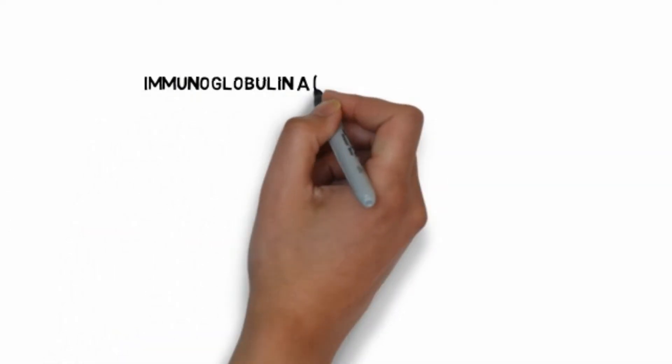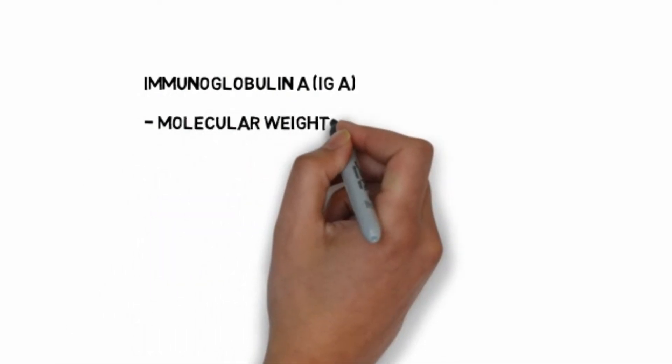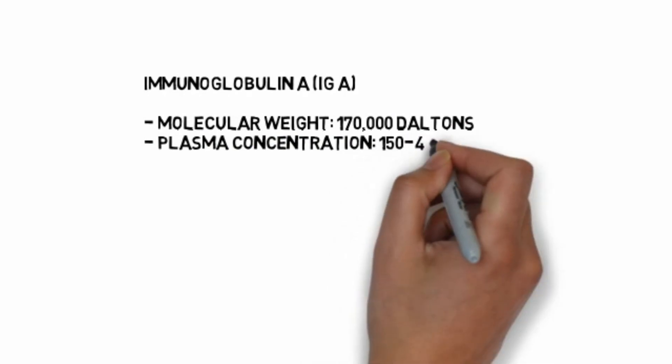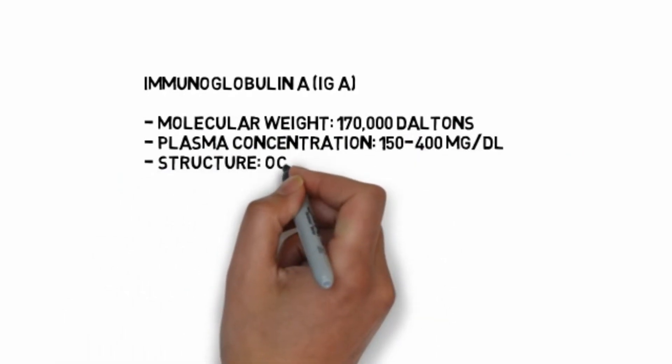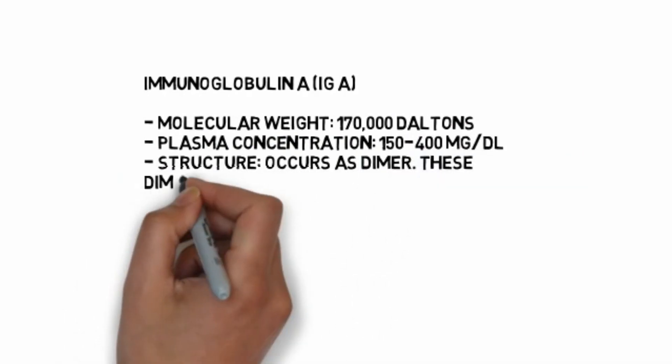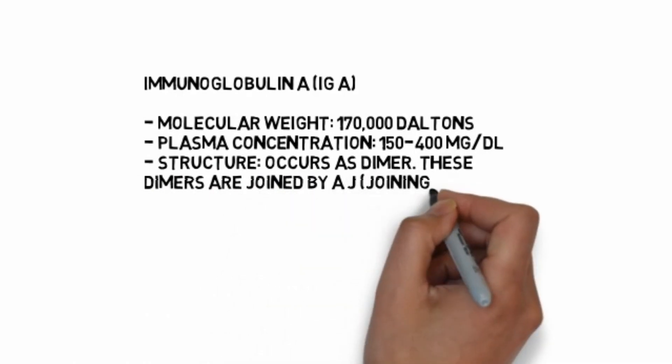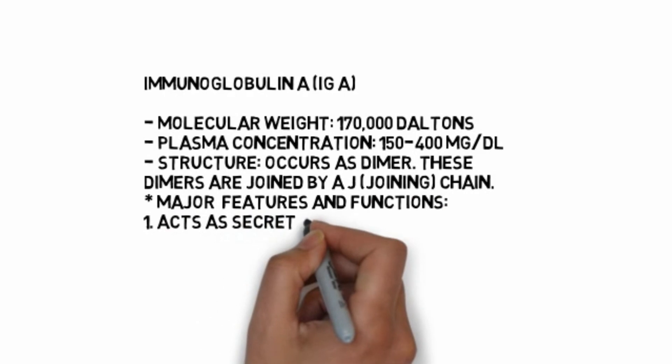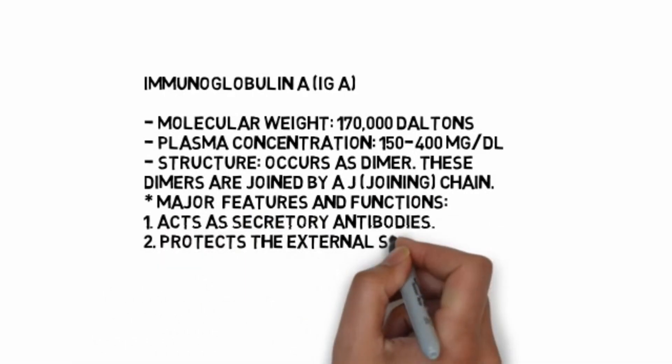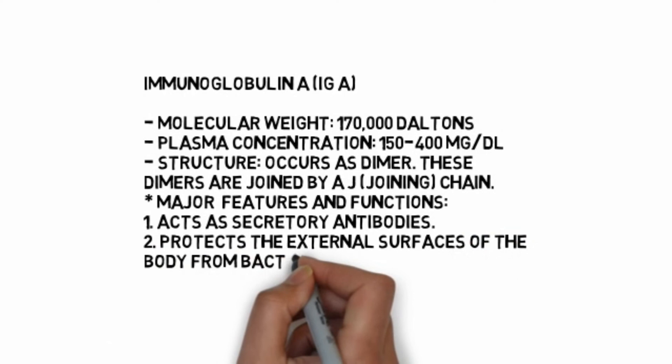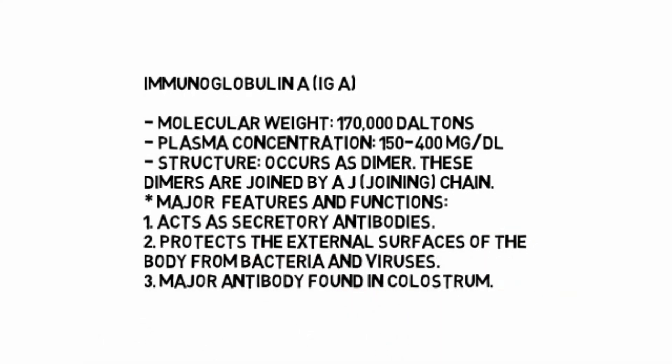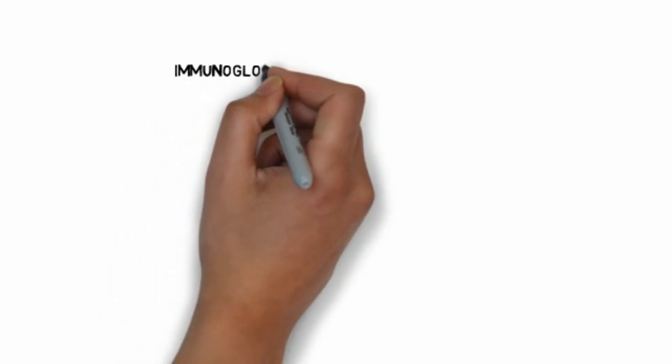Immunoglobulin IgA: molecular weight 170,000 daltons, plasma concentration 150 to 400 mg per deciliter. Structure occurs as dimer, these dimers are joined by J (joining) chain. Major features and functions: acts as secretory antibodies, protects external surfaces of the body from bacteria and viruses. Major antibody found in colostrum.